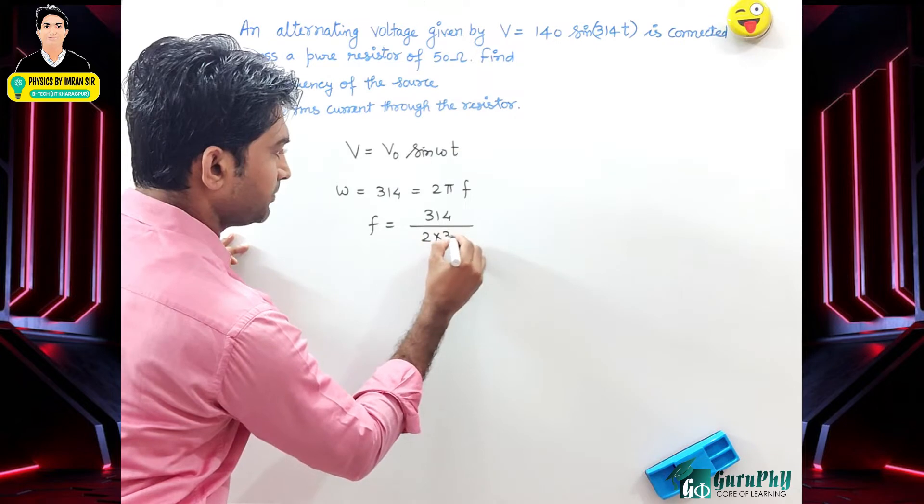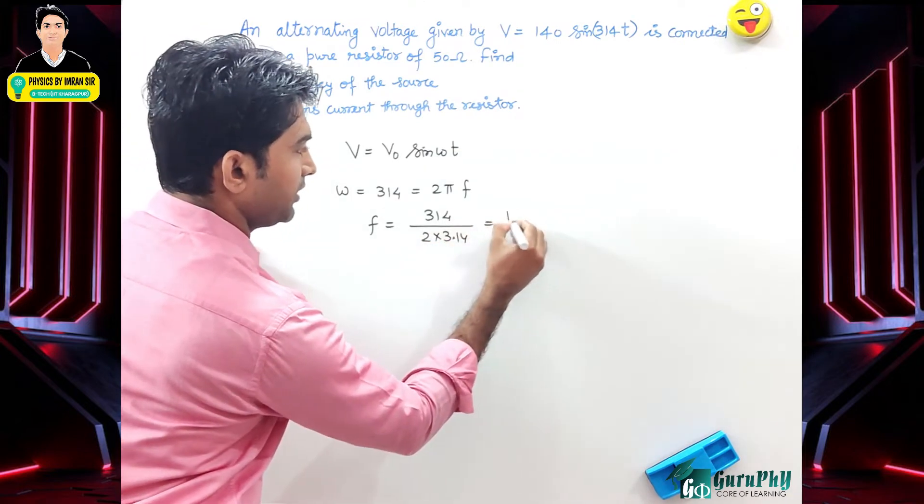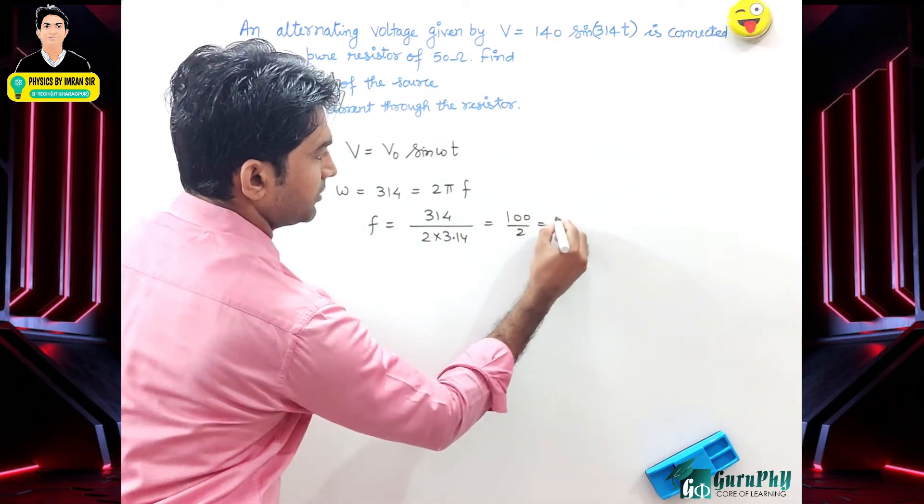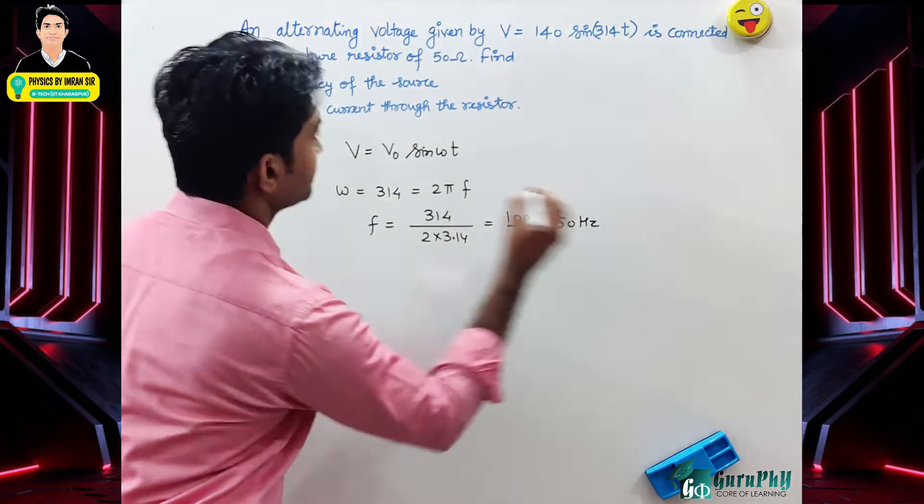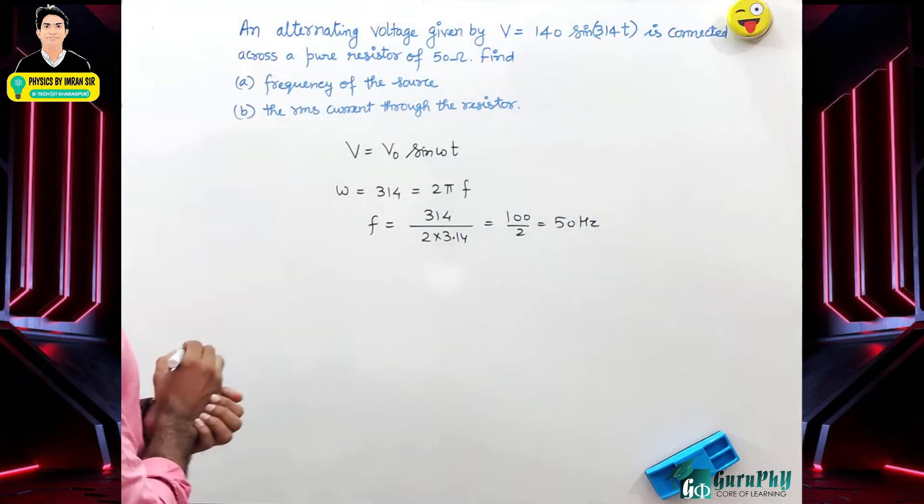Using π = 3.14, we calculate f = 314/(2×3.14) = 100/2 = 50 hertz. Next, find the RMS current through the resistor.